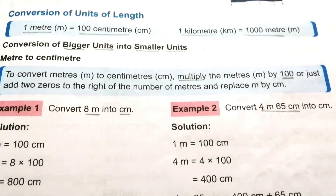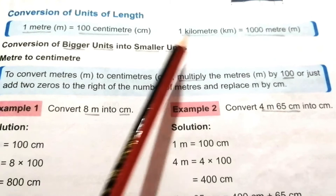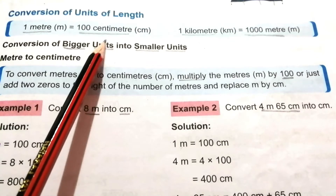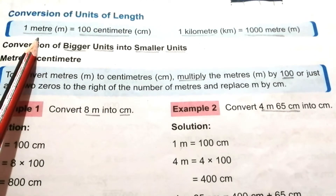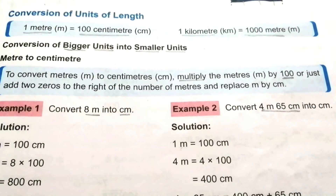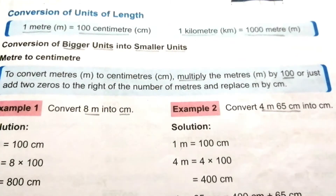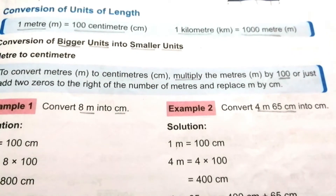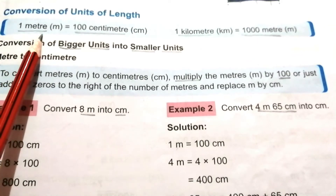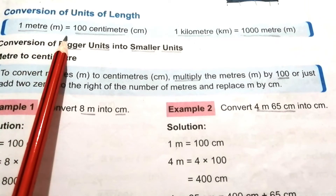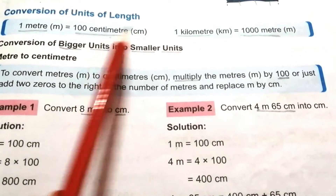We know the standard units of length are centimeter, meter, and kilometer. The length of smaller objects is measured in centimeters, the length of larger objects is measured in meters, and the distance between two cities is measured in kilometers. We can convert meter into centimeter or centimeter into meter, likewise kilometer into meter and meter into kilometer.